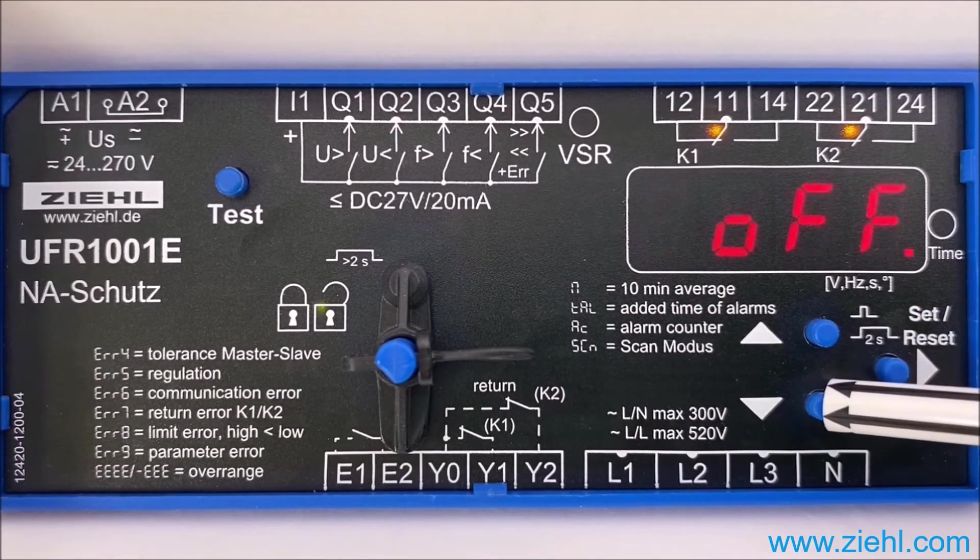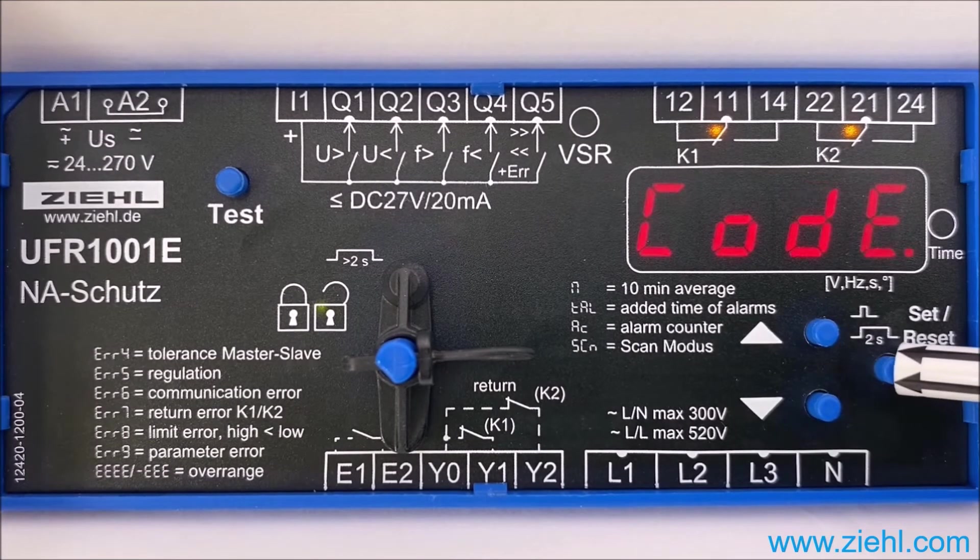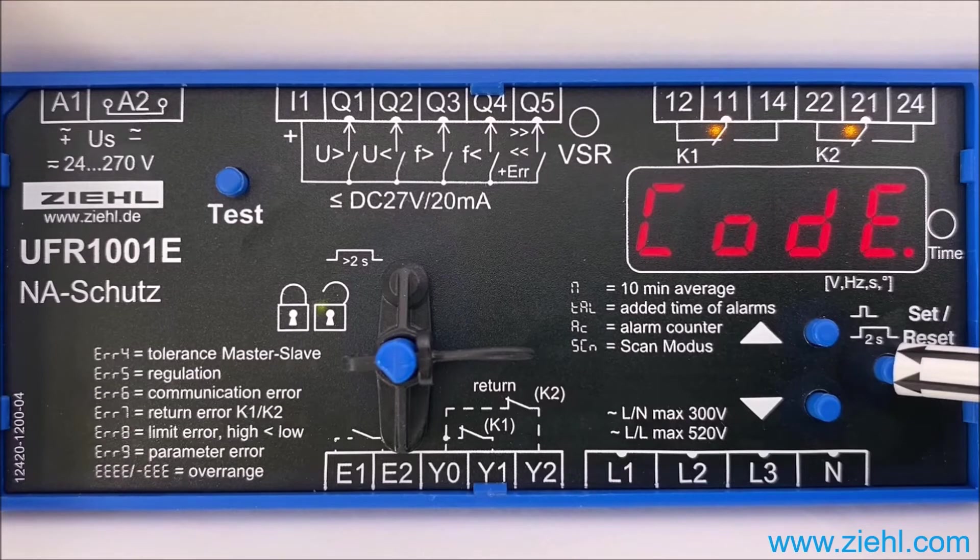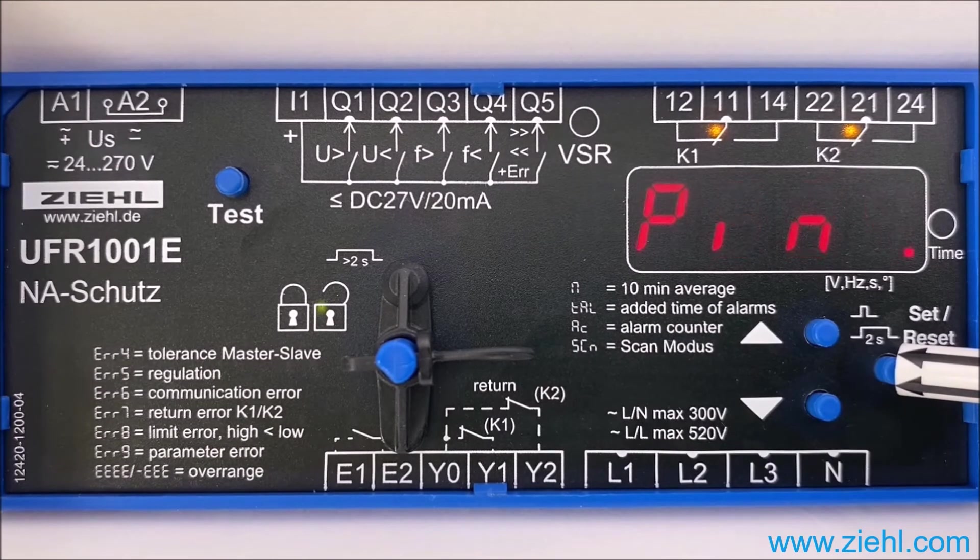Now you can switch off the code lock with down and confirm the selection with set. At this point you could set your own pin with up or down. We won't do this now and key 504 set.